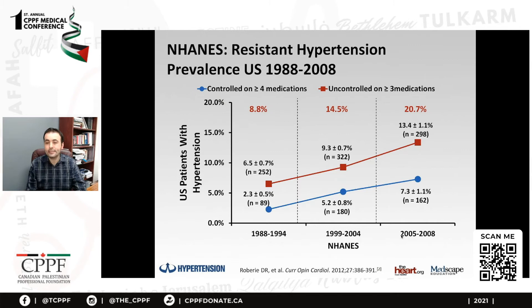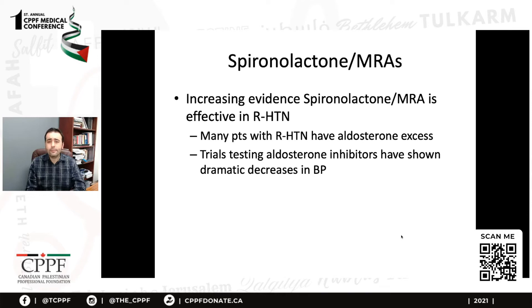True resistant hypertension does appear to be increasing over time. A population-based study from the 1980s to 2008 showed a significant increase in resistant hypertension. Over time, most likely because of lifestyle factors and longer life spans, we are seeing more resistant hypertension in the world.